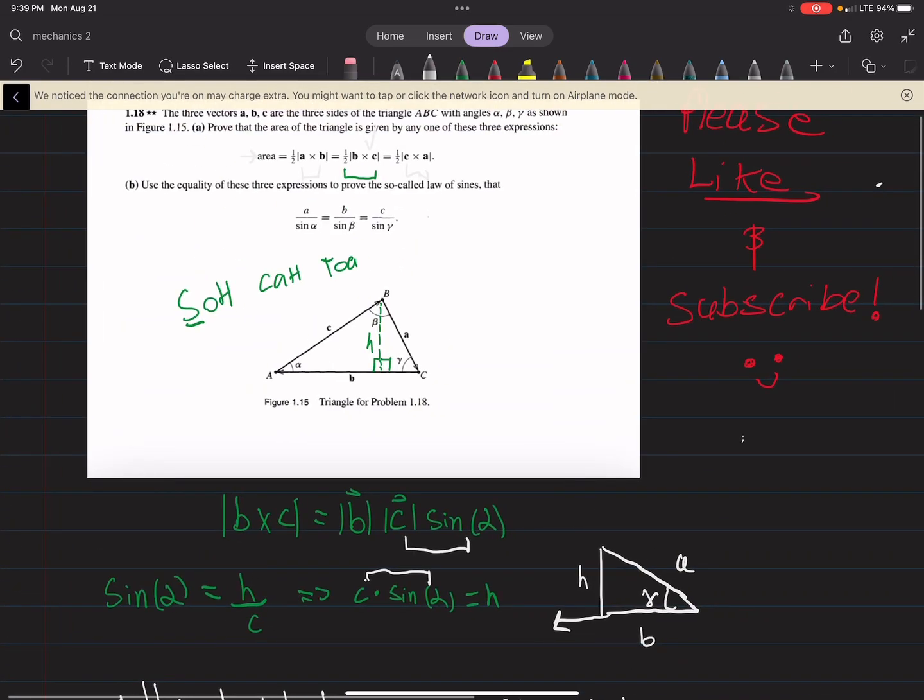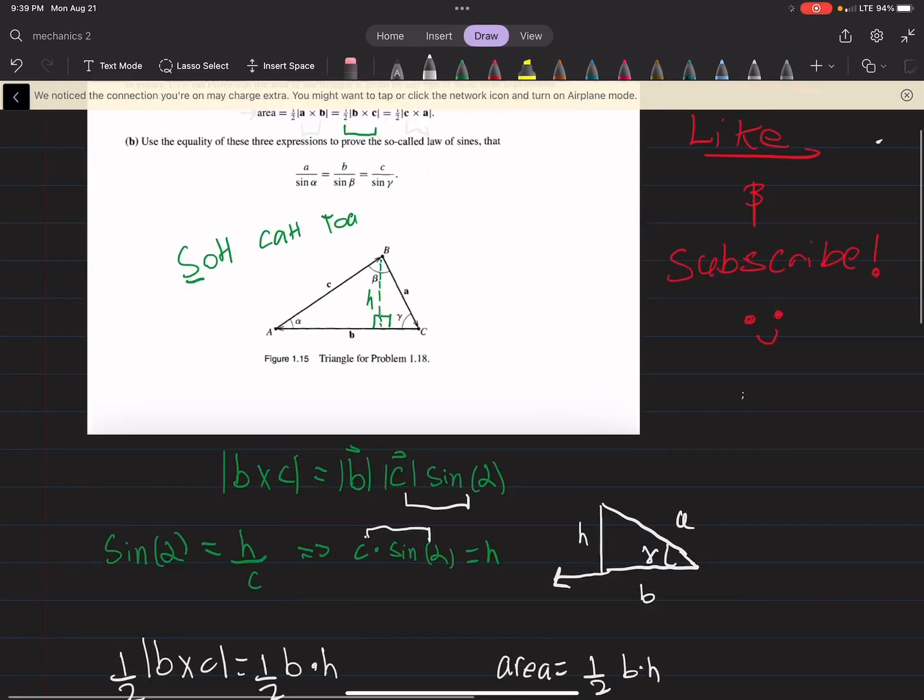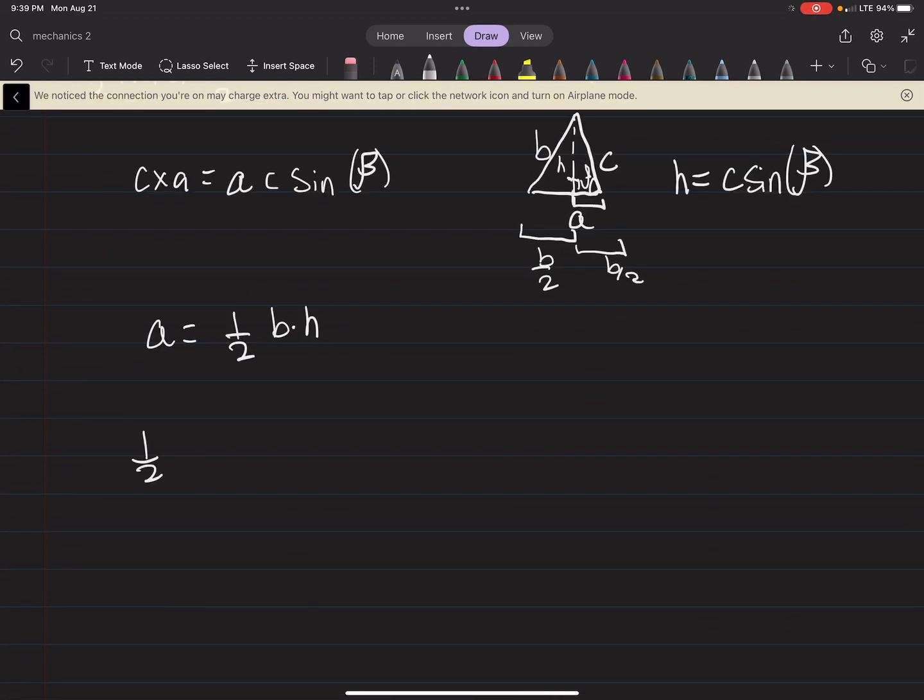And then, for part B, it's pretty straightforward once we have these expressions. So if we have one half A cross B, and we have one half B cross C, and we have one half C cross A, we can obviously multiply everything by two. And just equally, we can say that the cross product A, B is equal to the cross product B, C equal to the cross product C, A.